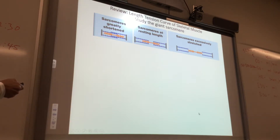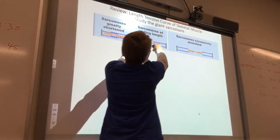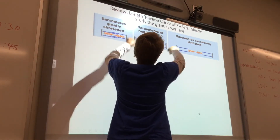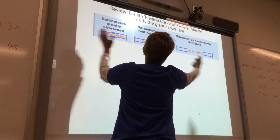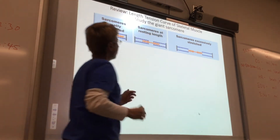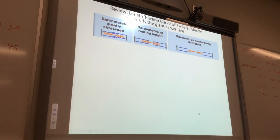See how every single myosin head on myosin is going to be able to find a binding spot on actin. When the reaction starts, each one of these myosin heads are going to cross-cycle and bring the two Z-discs closer together. The sarcomere is going to shorten, and you get an optimal contraction if you start here with your sarcomere.